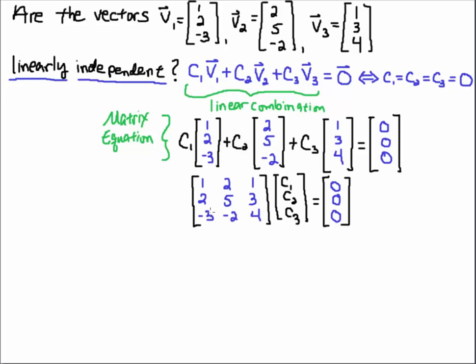If I were to take this matrix here and multiply it by this vector C1, C2, C3, you take C1 multiply it by 1, take C2 multiply it by 2, take C3 multiply it by 3. And then likewise, take C1 multiply it by 2, take C2 multiply it by 5, take C3 multiply it by 3.